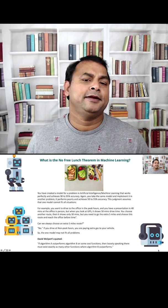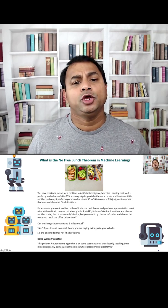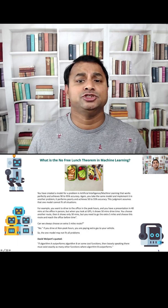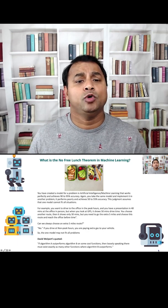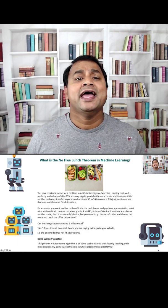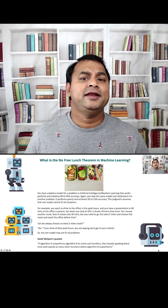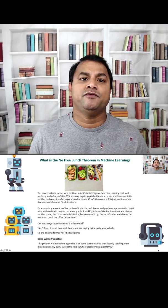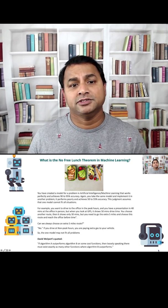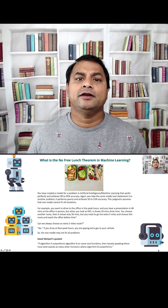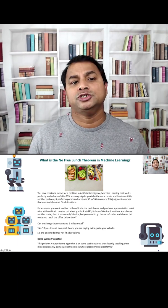What is the No Free Lunch theorem in machine learning? You created a model for a problem in artificial intelligence and machine learning that works perfectly, achieving 90 to 95 percent accuracy. But when you take the same model and implement it in another problem, it performs poorly, only achieving 50 to 55 percent accuracy. This suggests that one model cannot fit all situations.